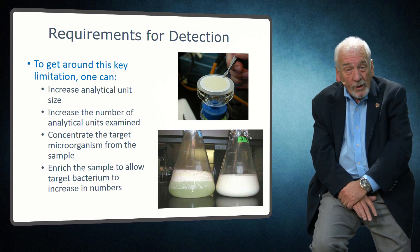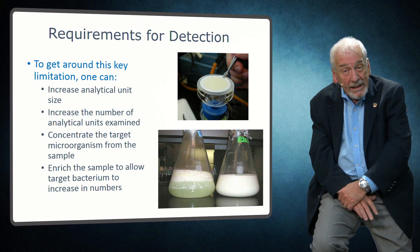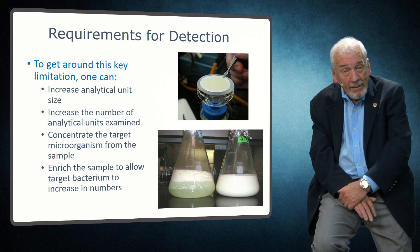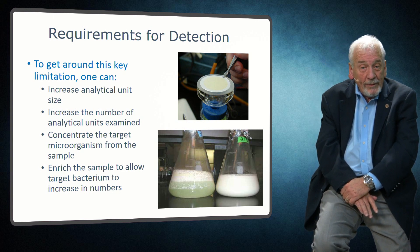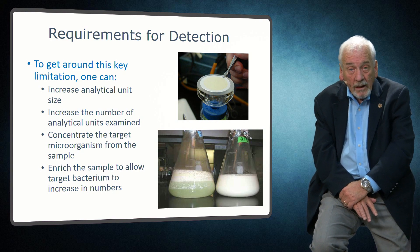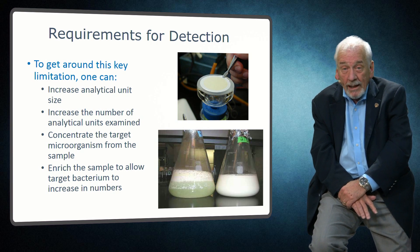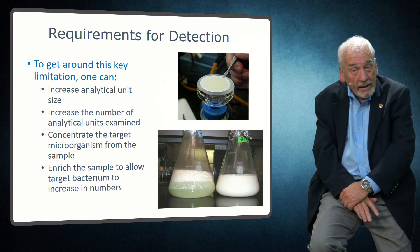When dealing with food samples that contain the target organism at mean log concentrations below those needed for a high degree of confidence of detection, analytical methods may need to be modified to reach the desired level of sensitivity. Two ways of doing this are to increase the size of the analytical unit — say from 1 gram to 25 grams — or to increase the number of analytical units being examined. This can also be combined with either concentrating the sample or enriching the sample. Concentration is commonly used in the analysis of water or other liquids, where a relatively large volume of liquid is passed through a micropore filter, which allows the water to pass through but retains the bacteria. The filter can then be transferred to microbiological plates and colonies allowed to develop.